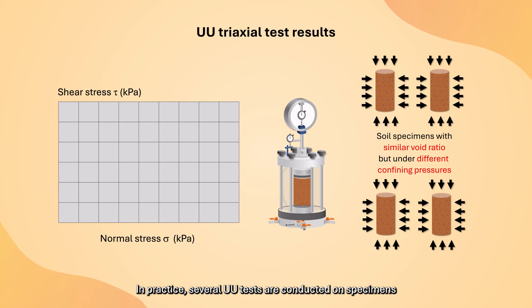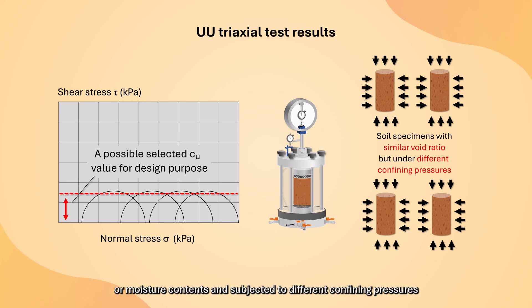In practice, several UU tests are conducted on specimens prepared from soil samples with similar void ratios or moisture contents and subject to different confining pressures. Assuming the soil specimens are fully saturated, a number of Mohr circles of similar sizes can be obtained from these tests. We may then select a suitable Cu value for design, taking into account possible sample variations.